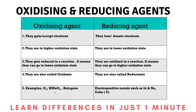Examples of oxidizing agents include oxygen, KMnO4 (where manganese is in a higher oxidation state), and halogens, which act as good oxidizing agents. Examples of reducing agents include electropositive metals such as lithium and sodium, and coke — these are all good reducing agents.